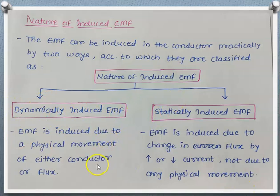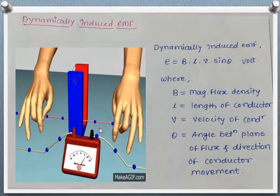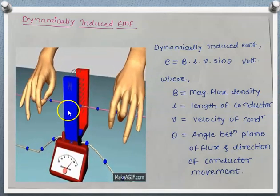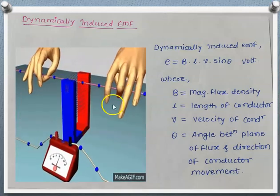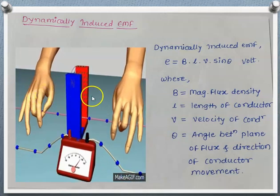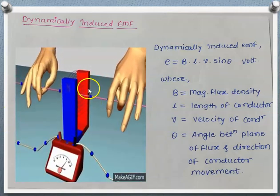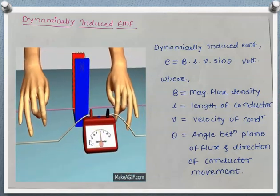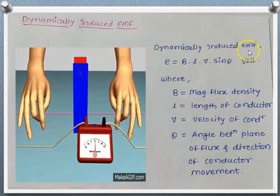We will discuss both types in detail. Today's session covers dynamically induced EMF; in the next session we will discuss statically induced EMF. Dynamically induced EMF is the EMF induced due to physical movement of the conductor or the flux. The figure here shows a magnet with north pole and south pole that is stationary, while a conductor held by a person is moving from top to bottom. The EMF indicated by the galvanometer's pointer deflection is dynamically induced EMF, because physical movement of the conductor is involved.